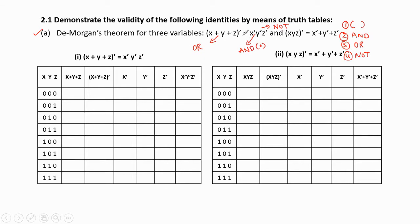Let us verify the first theorem: (x + y + z)̄ = x̄ȳz̄. We take the truth table and write the input variables x, y, z in the first column. With three input variables we can write eight combinations, numbers 0 to 7. For these eight numbers we write the equivalent binaries based on the three binary weights.